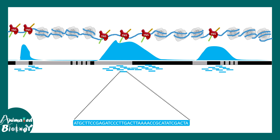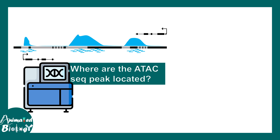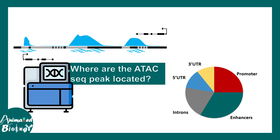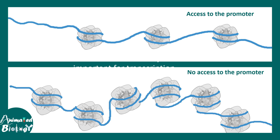When we get a peak, we understand that particular region was more accessible, and that's why Tn5 can go there and do its job. The question is: where do we see the ATAC-seq peak? That determines gene regulation itself. We might see ATAC-seq peaks in the enhancer, promoter, introns, or 5' UTR, and accessibility in each of these regions may have different outcomes.